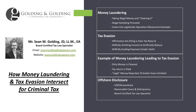Tax evasion requires an affirmative act, which the government must prove beyond a reasonable doubt. Someone has a tax return and they file that return with a certain amount of income — legal income. Let's say they receive that income in cash. When filing their tax return, they know they received the income but intentionally don't include it. That affirmative act — filing the false return — is what's required. They knew they were supposed to include that income and didn't, so now they're guilty of tax evasion.